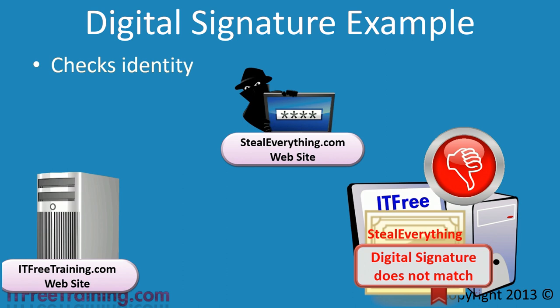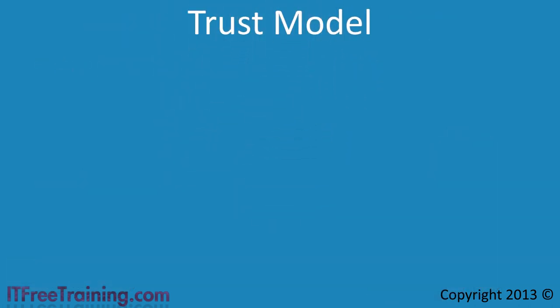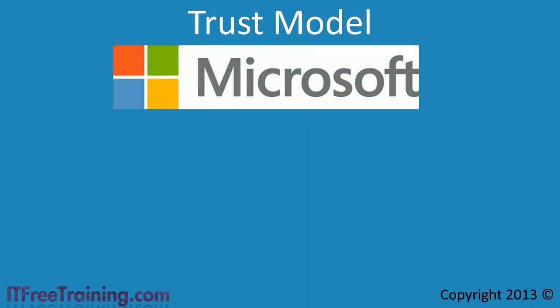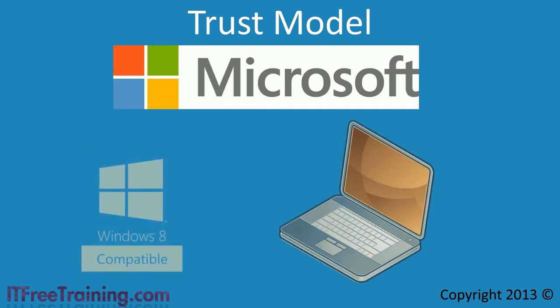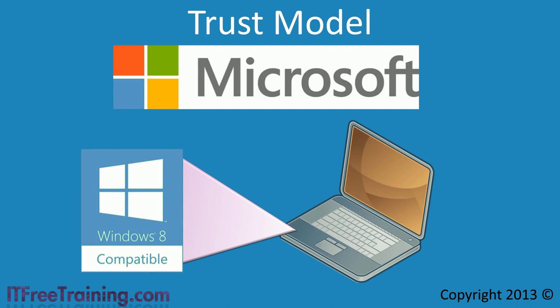The next question is: if you were given a digital certificate, would you trust it? Certificates work off a trust model. To illustrate this, consider an example that occurs often in the real world. Let's say you have the company Microsoft. Microsoft makes operating systems, and you want to buy a laptop that will work with Windows 8. You find a laptop with a sticker saying Windows 8 compatible. Even though the laptop is not made by Microsoft, you can be assured that Windows 8 will work on it. You are trusting that the manufacturer put the sticker on because their laptop works with Windows 8, and you are trusting Microsoft that they would not allow such a sticker on a laptop that would not run Windows 8. You can see how one trusts the other, and the person who purchases the laptop must trust both.